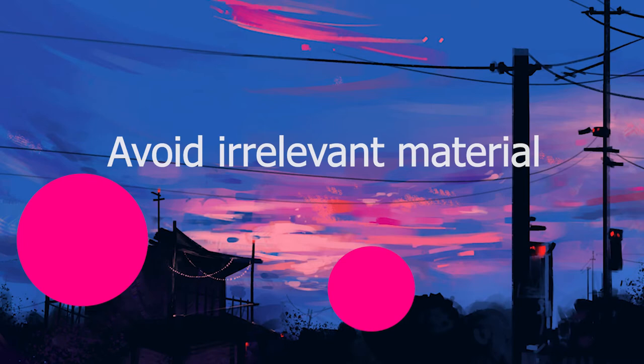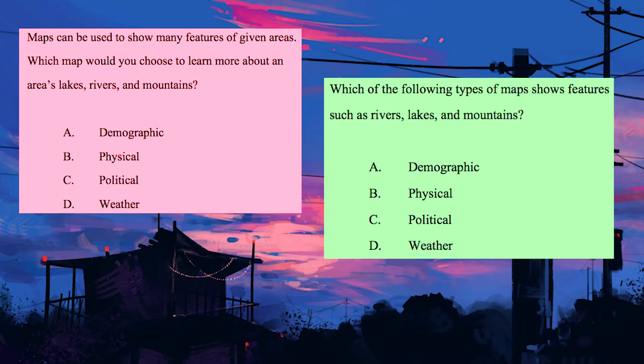The stem should not contain irrelevant material. This minimizes the likelihood that an incorrect response will come from misunderstanding of the stem as opposed to lack of content understanding.